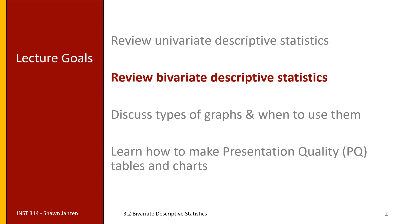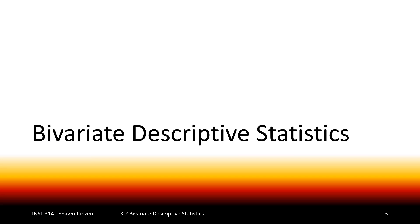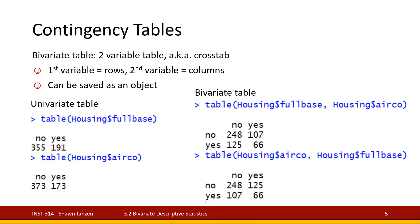We're going to start moving into the bivariate descriptive statistics section. We're going to bring in some familiar data sets we've been working with in previous videos — both the housing data and the Netflix data. Here on the screen we have the commands that will bring in the housing data. We're going to start looking at a comparison between the univariate tables we had in the last lecture, which you can see with just the table function.